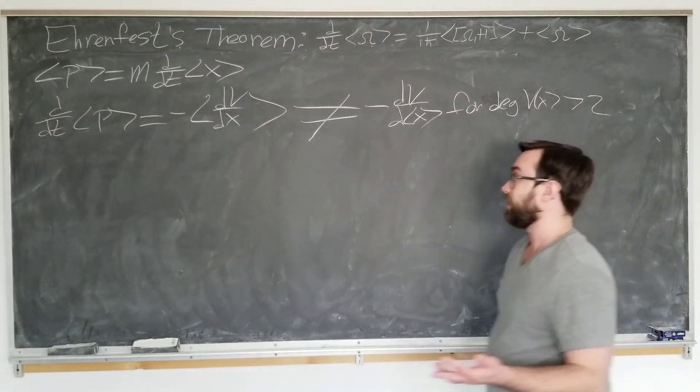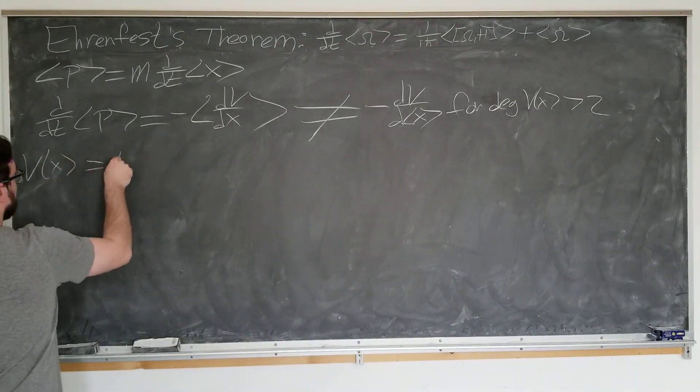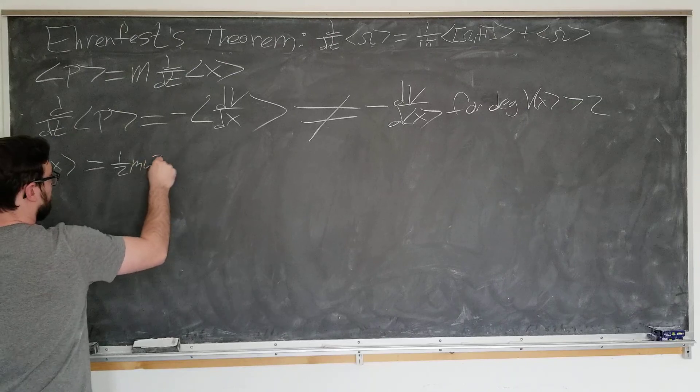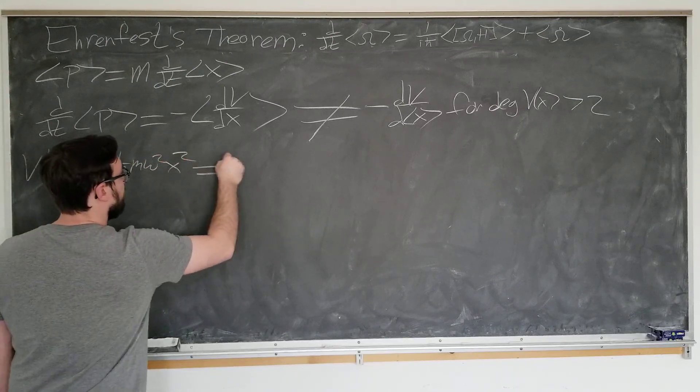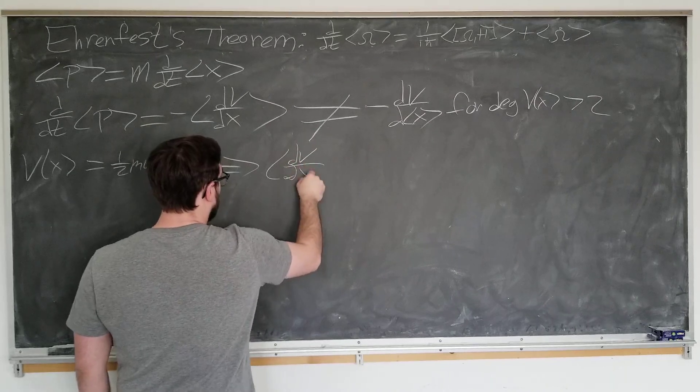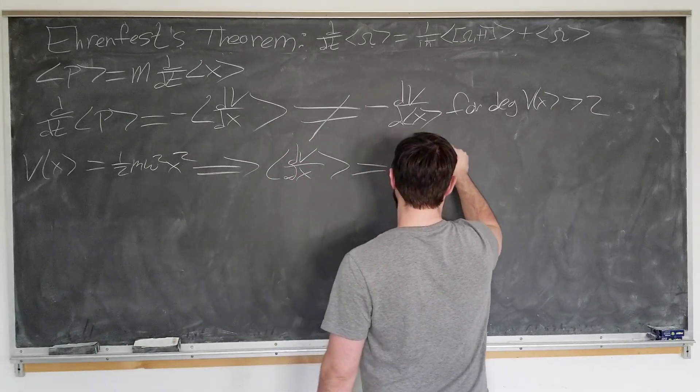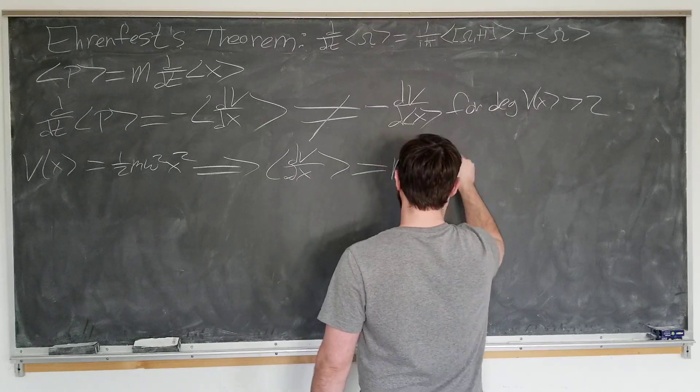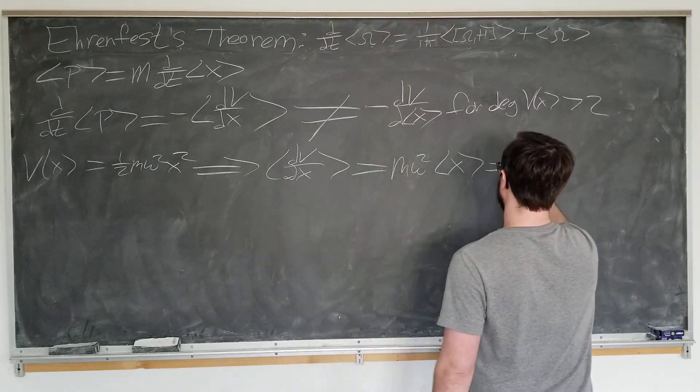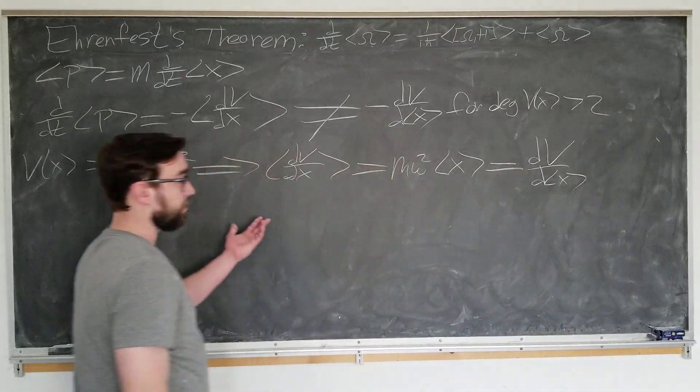We're going to show this as an example. First consider v of x equals one-half m omega squared x squared. In this case, if we calculate bracket dv by dx, we obtain m omega squared x, which is, in this case, equal to dv by d bracket x. Good, works in that case.